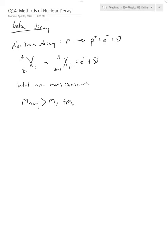It will occur if the mass of the nucleus is greater than the mass final, the mass of the nucleus final, plus the mass of the electron.